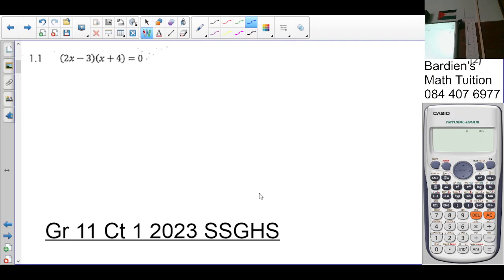Question 1, at any point if you didn't understand or you're confused about something, you can let me know and I'll try and clarify. So the first question is solve for x. We've got 2x minus 3 into x plus 4 is equal to 0. It's already in the zero factor form, so we say 2x minus 3 is equal to 0 or x plus 4 is equal to 0. Solving for x, x is equal to 3 over 2 or x is equal to negative 4.